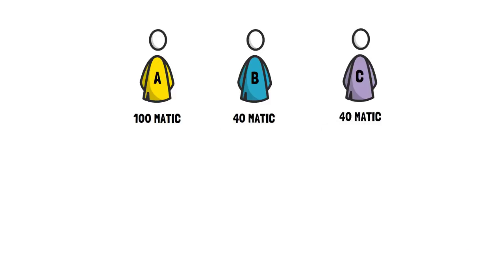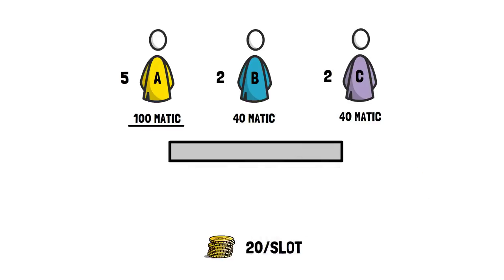Validators are given slots according to their stake. As Alice has 100 MATIC tokens staked and there are 20 tokens per slot, maintained by validator's governance, Alice will get 5 slots in total. Similarly Bill and Clara get 2 slots in total. All the validators are given these slots.